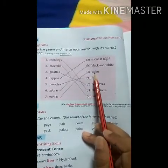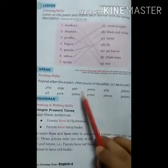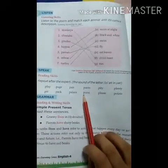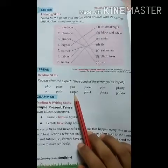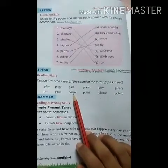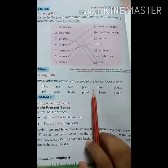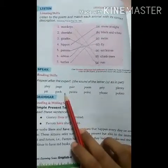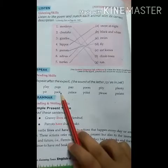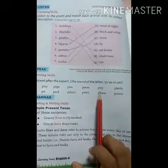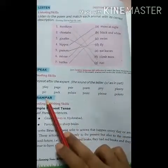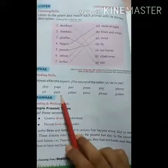Next is your speaking and reading skills exercise. You have to repeat after me. The sound is 'p' as in 'pet' — like play, page, pair, poem, pity, plenty, pit, pack, place, palace, point, please, potato.